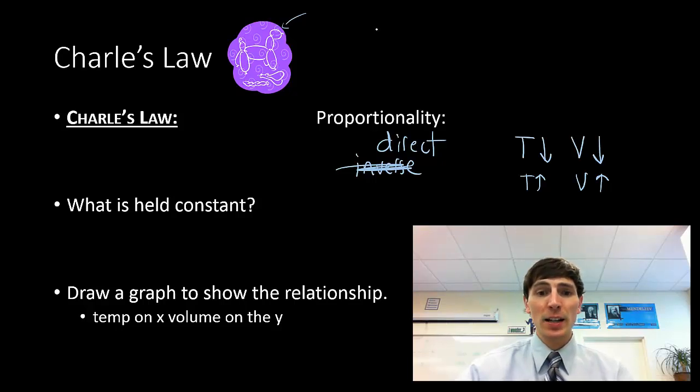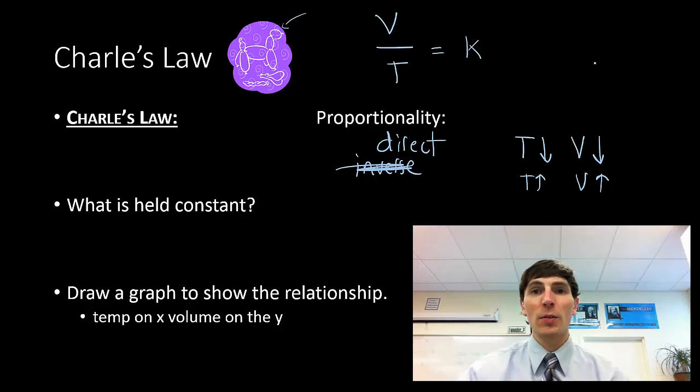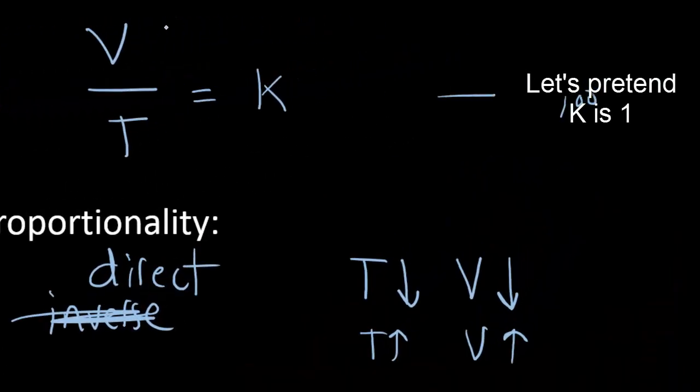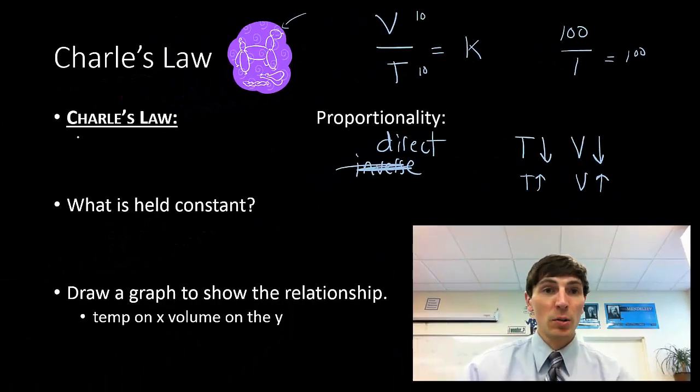Looking mathematically at what was going on, he noticed that a given volume of gas at a given temperature, when he divided those two, would always equal some constant value. If K were 100, and volume is 10, temperature is 10K, when volume goes up to 100, temperature would have to go up proportionally to equal that same value. This was a direct relationship. They had to increase both or decrease both.